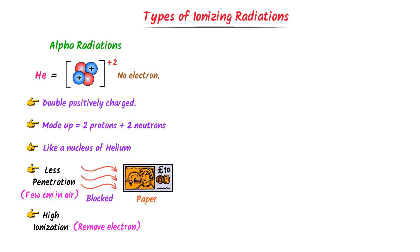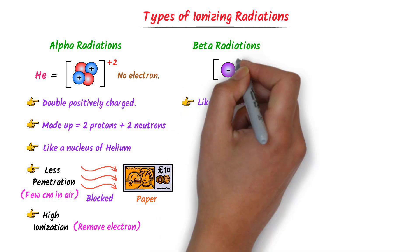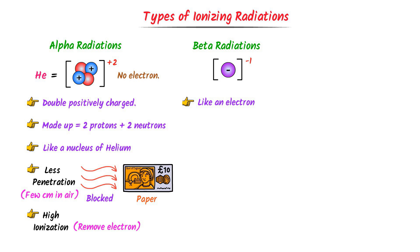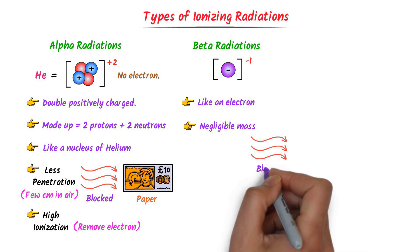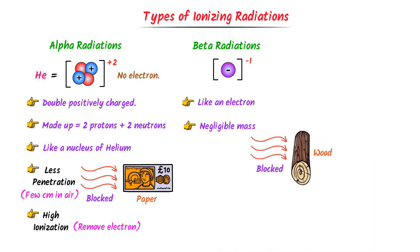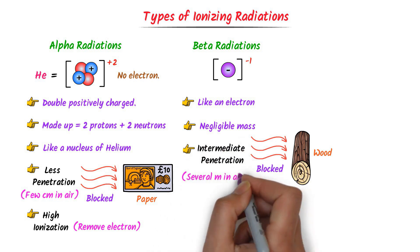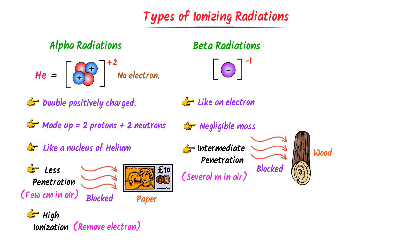The second type of ionizing radiation is beta particles or beta radiations. Beta particles are just like electrons, with a charge of negative one, and their mass is negligible. Relatively, beta particles are very tiny. They can easily penetrate through paper but are blocked by wood, and they can travel several meters in air. Due to their tiny size, they have moderately ionizing power.